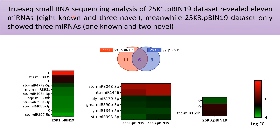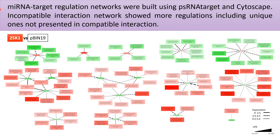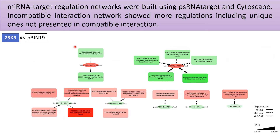Small RNA sequence analysis revealed a total of 21 miRNAs, of which 11 were unique to the incompatible interaction and 3 were novel. We built a miRNA target regulation network using psRNATarget and TargetMiner, which showed more regulatory interactions—including unique ones—in the incompatible interaction than in the compatible interaction.